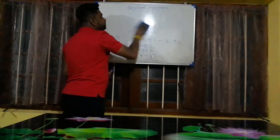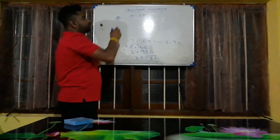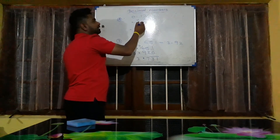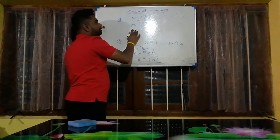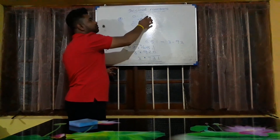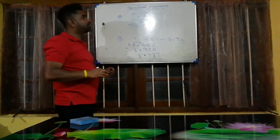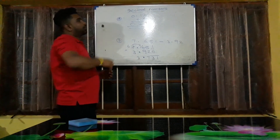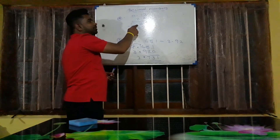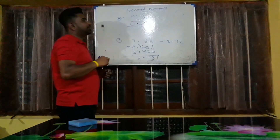Let's go to the last part: multiplying a decimal number by a whole number. Example: 0.12 multiplied by 2. Multiply normally ignoring the decimal point: 2 times 2 is 4, 2 times 1 is 2, 2 times 0 is 0. From the decimal number 0.12, after the decimal point there are two digits. So from the answer, separate two digits and place the decimal point: result is 0.24.